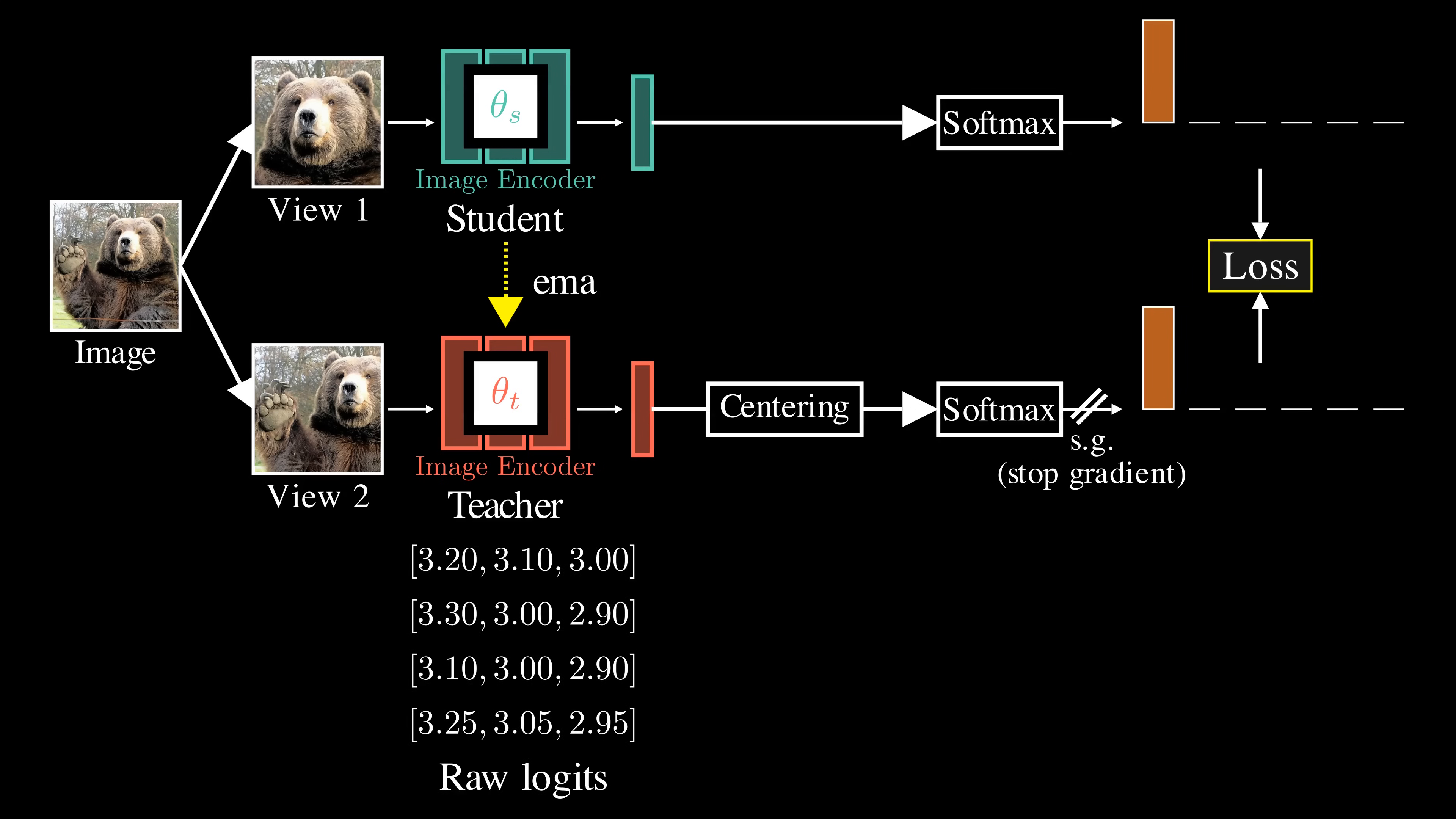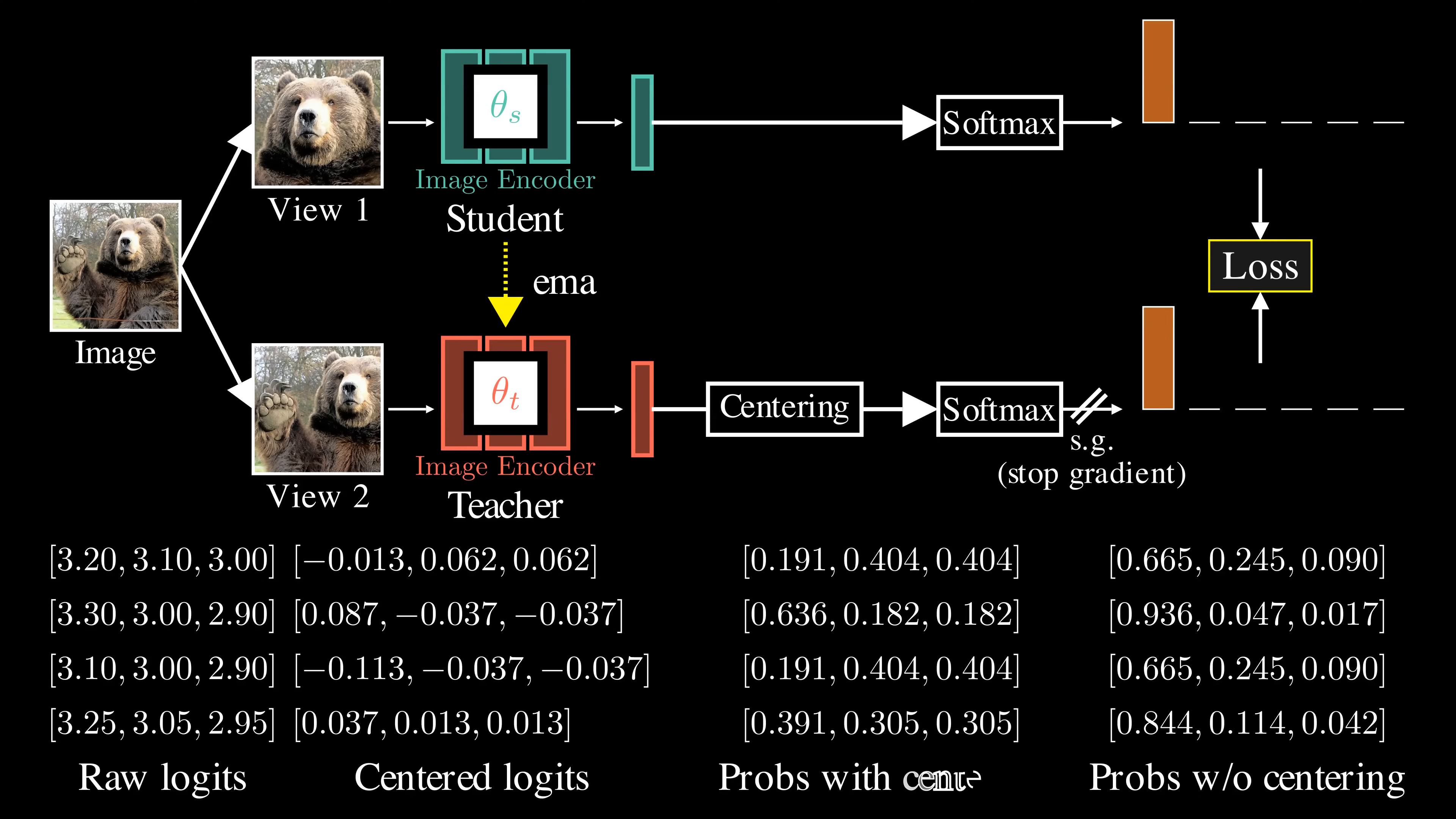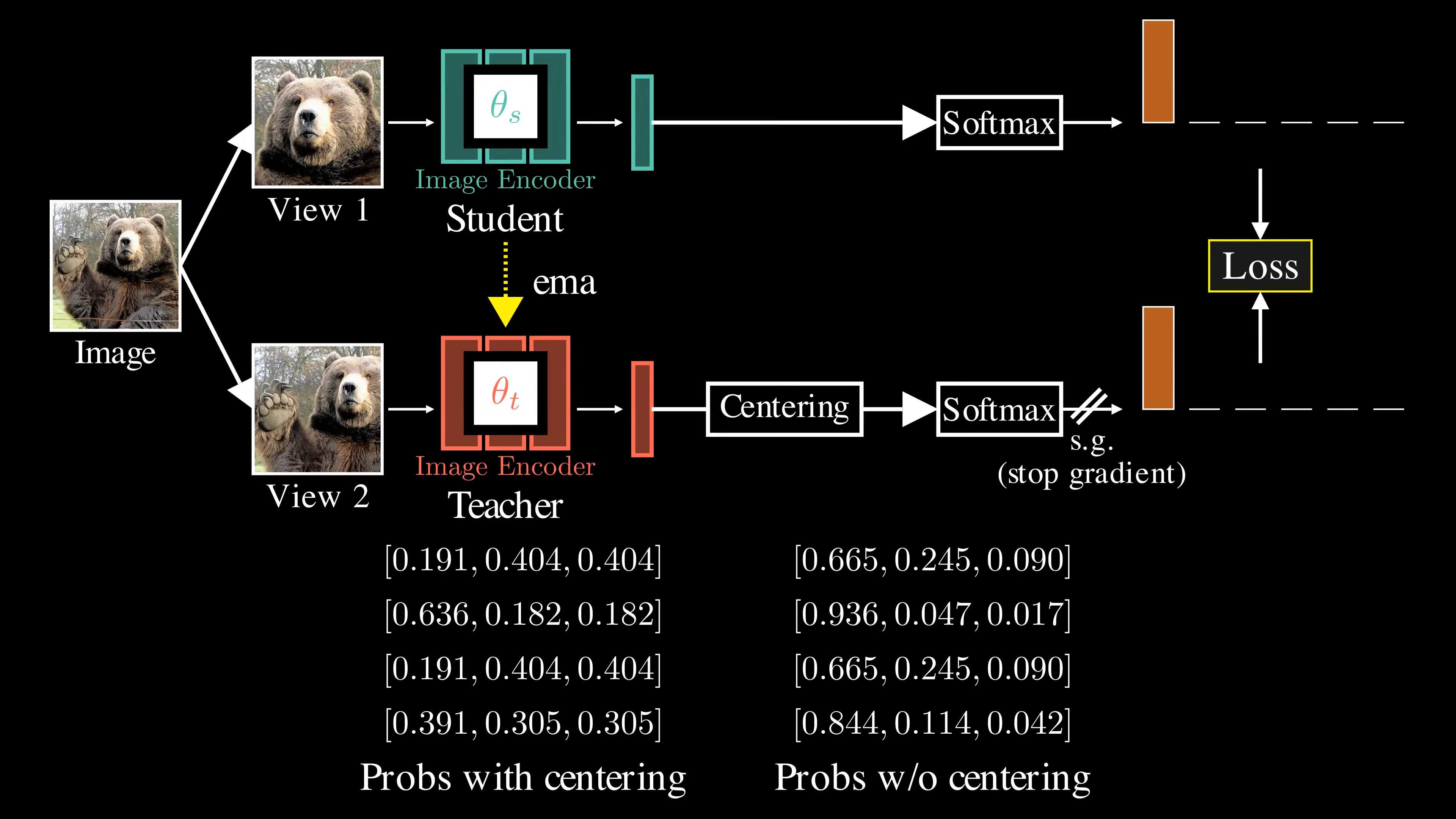Let's illustrate how it works with an example. Suppose we have a batch of four samples, and our model predicts probabilities over three classes for each sample. After applying softmax, most of the probability mass is concentrated in the first dimension. This is bad. Next, we calculate the average logit, the center, across the batch, and subtract the center from each of the teacher's logits. The centering trick encourages the model to spread its predictions more evenly, rather than focusing on a single output. Centering helps prevent collapse by ensuring the average output of the teacher network remains balanced across all output dimensions.